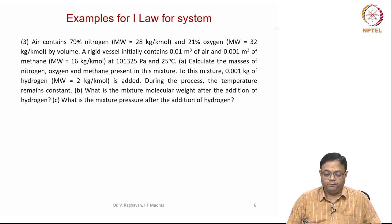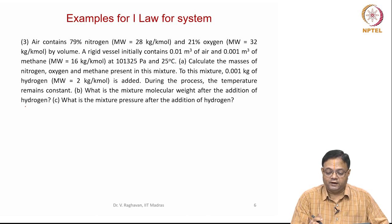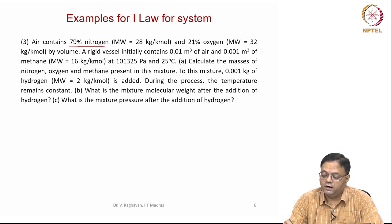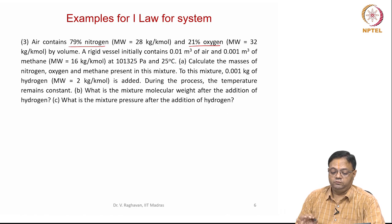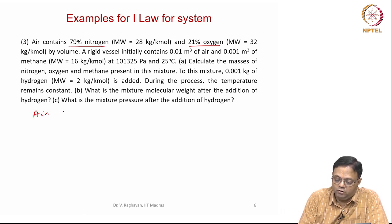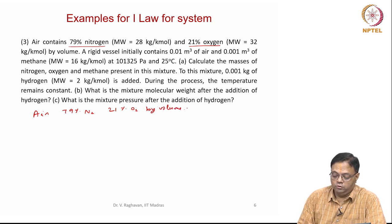We will go to the next problem, the third one. Air contains 79 percent of nitrogen and 21 percent of oxygen. So when I say air, it is itself a mixture — 79 percent nitrogen, 21 percent oxygen by volume.